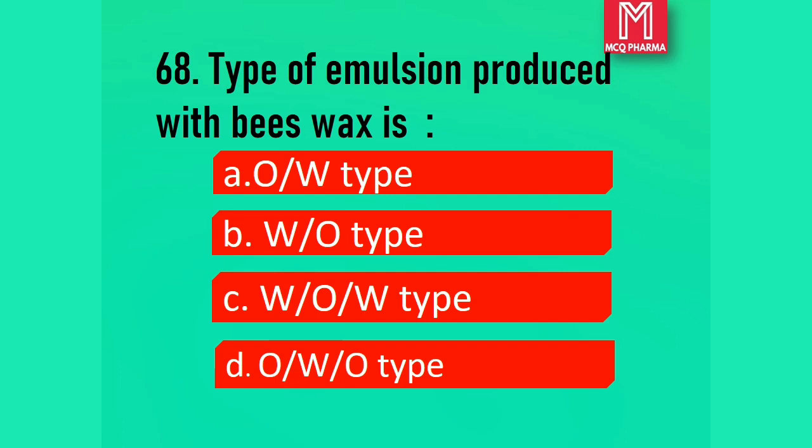Question number 68. Type of emulsion produced with beeswax is: Option A, Oil in water type. Option B, Water in oil type. Option C, Water in oil in water type. Option D, Oil in water type. Correct answer: Option B, Water in oil type.